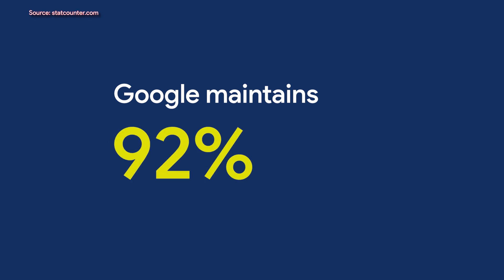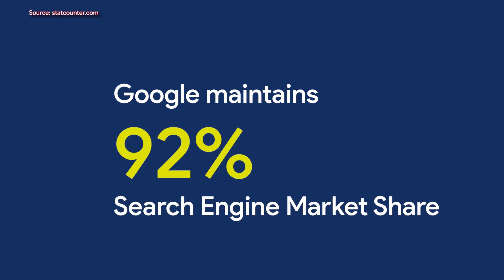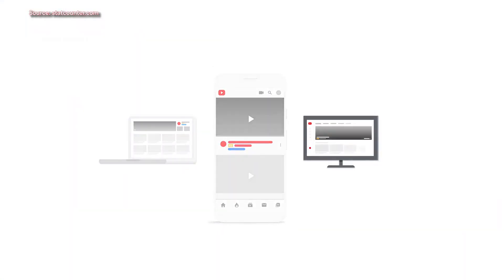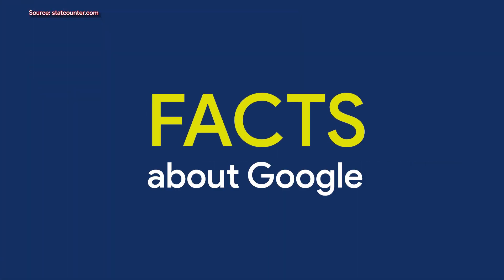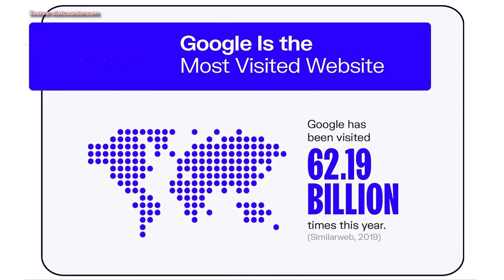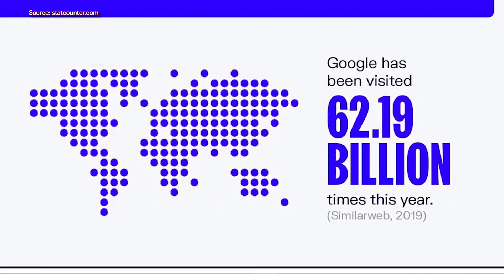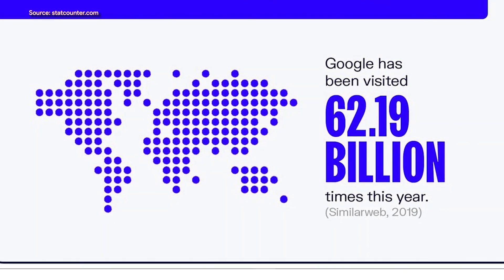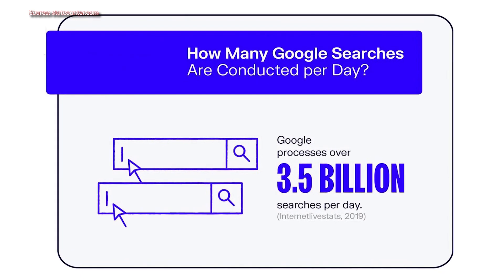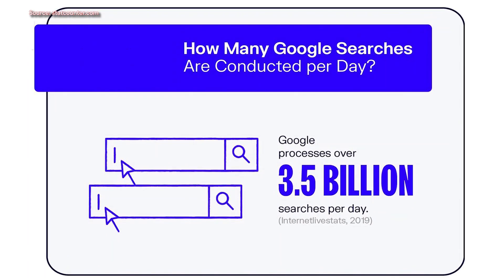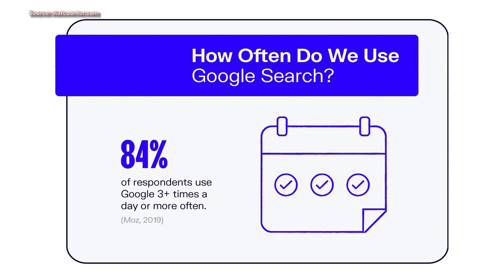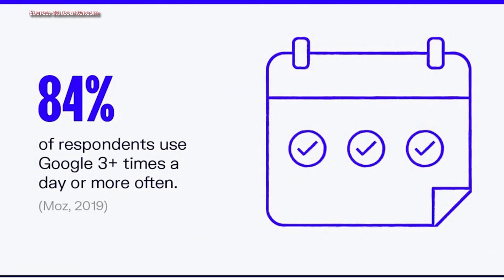According to StatCounter.com, Google has dominated the search engine market, maintaining a 92% market share as of January 2021. This means most searches people make on the internet are done through Google. Google is the most visited website in the world — in 2019 alone, Google was visited 62 billion times, and Google processes over 3.5 billion searches every day. Most people use Google about three times every day.